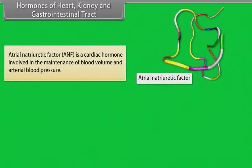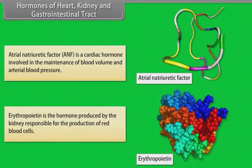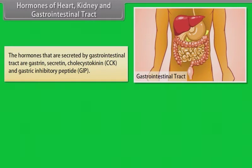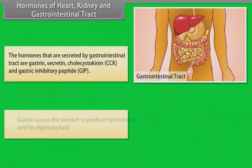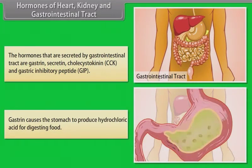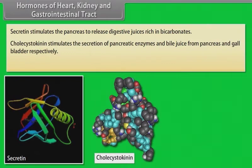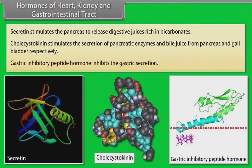Atrial natriuretic factor (ANF) is a cardiac hormone involved in the maintenance of blood volume and atrial blood pressure. Erythropoietin is the hormone produced by the kidney responsible for the production of red blood cells. The hormones secreted by the gastrointestinal tract are gastrin, secretin, cholecystokinin (CCK) and gastric inhibitory peptide (GIP). Gastrin causes the stomach to produce hydrochloric acid for digesting food. Secretin stimulates the pancreas to release digestive juices rich in bicarbonates. Cholecystokinin stimulates the secretion of pancreatic enzymes and bile juice from the pancreas and gallbladder respectively. Gastric inhibitory peptide hormone inhibits gastric secretion.